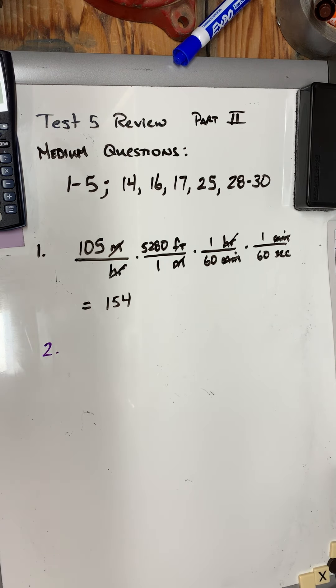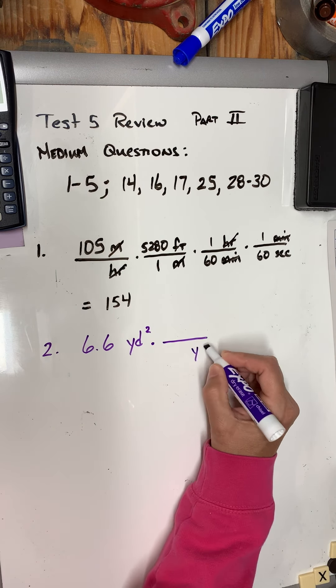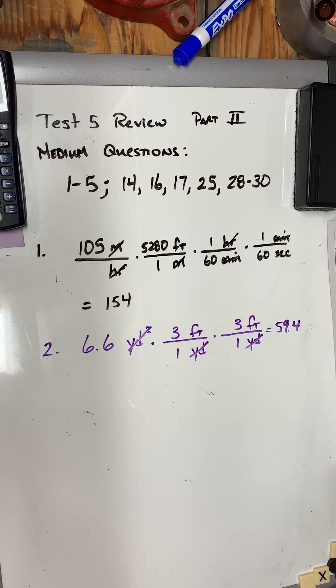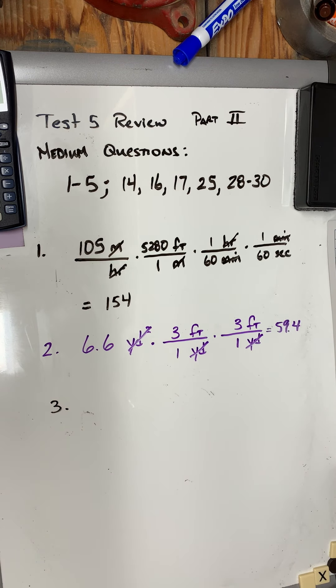Okay, so that was number one—that was medium because you had three unit fractions that you had to put in there. Let's look at number two. Number two wants 6.6 square yards converted to square feet. So I know that I need a yard down here to cancel and convert to feet—one yard is three feet—but I need a second yard because I had two of them because they were yard squared. So in the end these two will cancel with that, and my answer will be 6.6 times 3 times 3 times 3, and it will be feet squared. I believe the answer for that was 59.4.